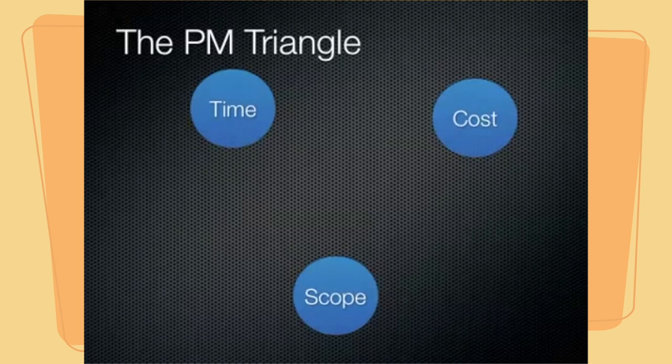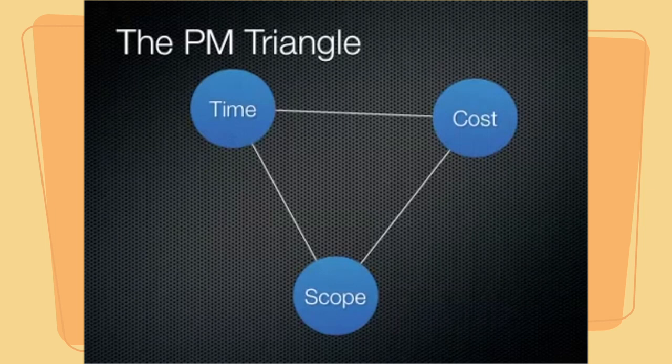These three aspects of our project are interrelated and linked to each other. We refer to this as a triangle because we can't change one of these project aspects without affecting the others. So if we decrease the time to completion, we may have to make adjustments to the cost or scope. Likewise, if we increase the scope, we will be affecting either the cost or the time to completion, or perhaps both.